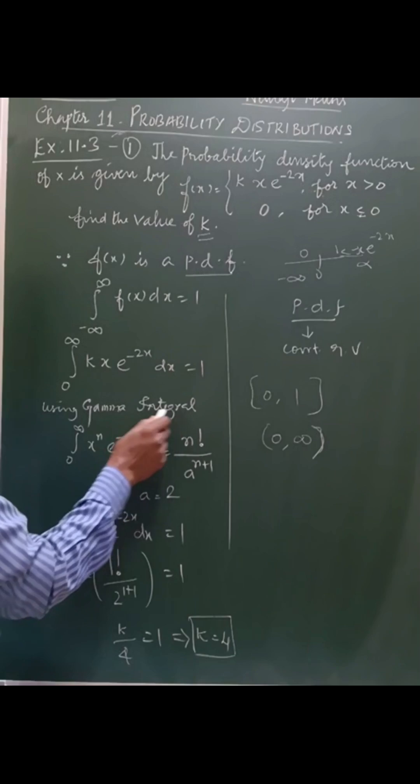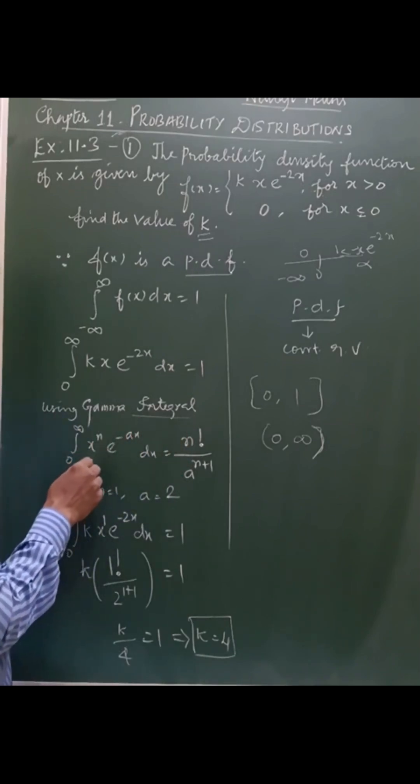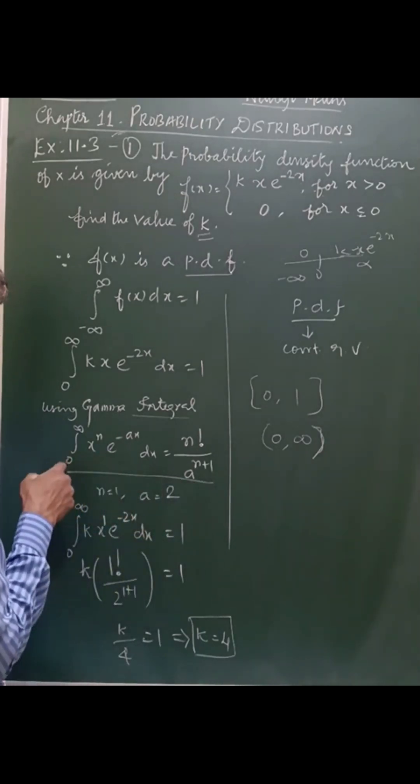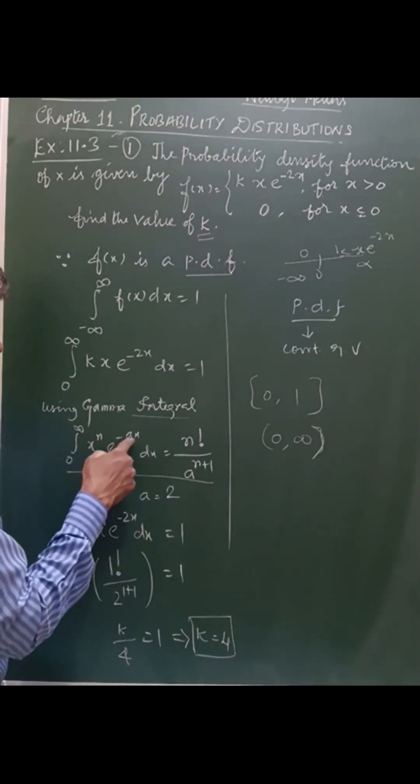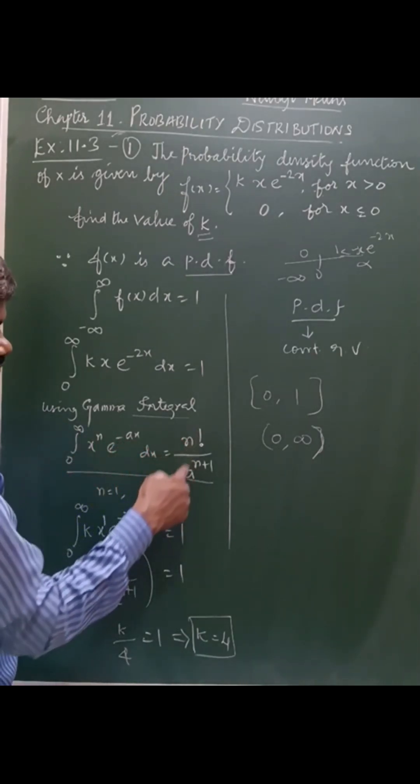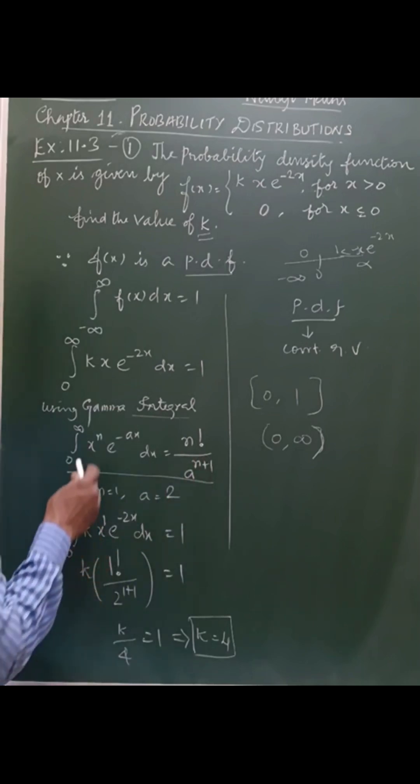Using the gamma integral, we use the formula for the gamma integral: 0 to infinity, x power n into e power minus ax dx equal to n factorial by a power n plus 1.